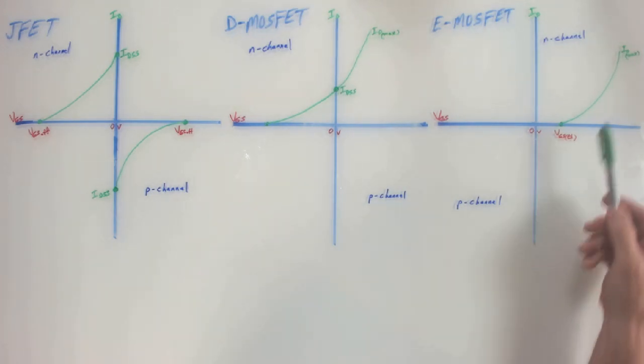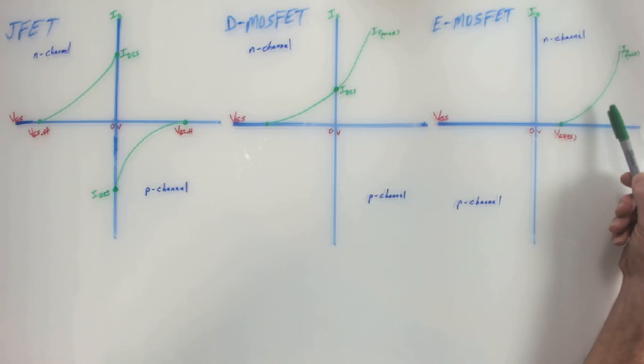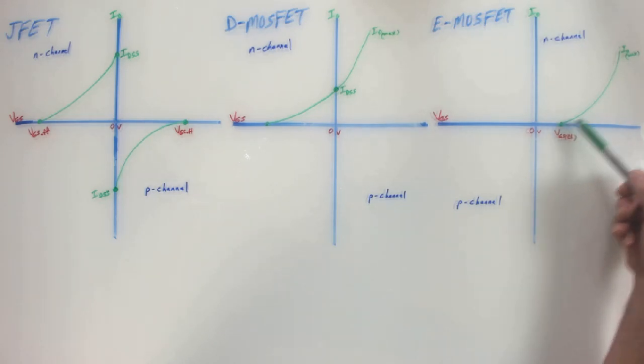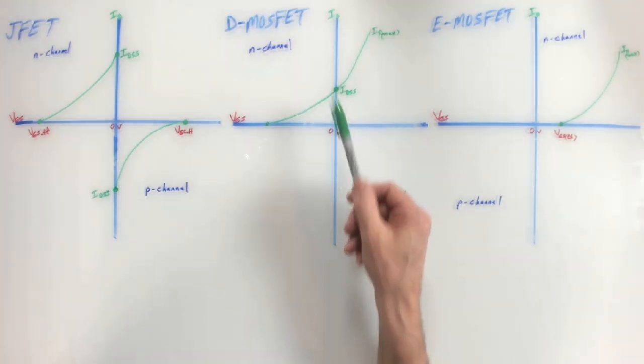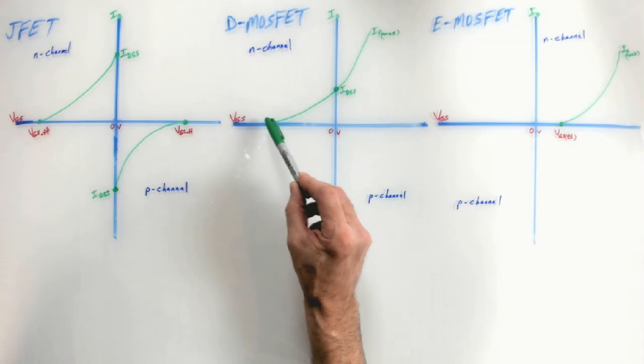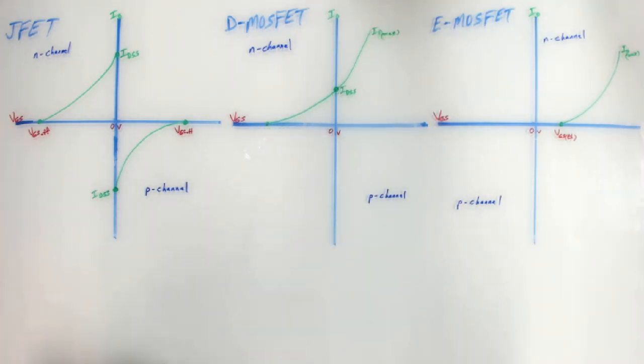And you can see then that the E-MOSFET really, you can't deplete it, it's already at zero. Like just picking it up off the shelf, it's already off. And you can enhance drain current. For a D-MOSFET at zero volts, well, you can go either direction. You can deplete the current with negative voltage. You can enhance the drain current with positive voltage. And a JFET's depletion only, of course, you can only deplete it. You can't get it to go any higher. Zero volts is as on as it can be.